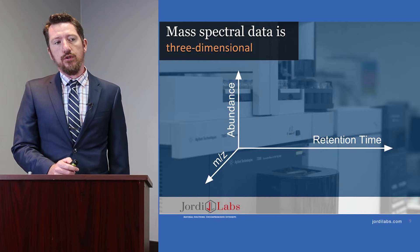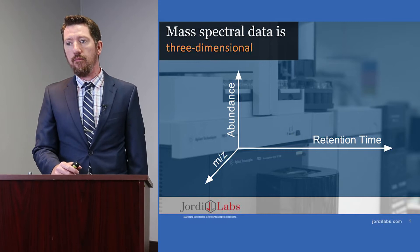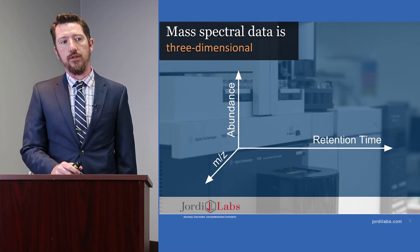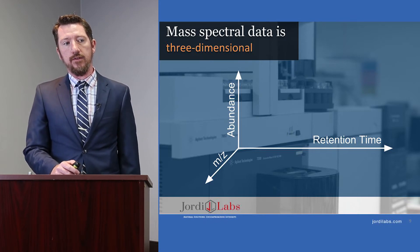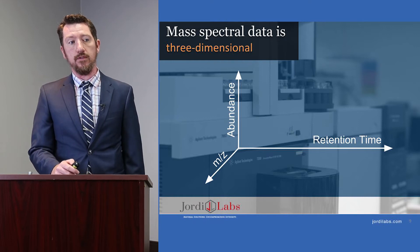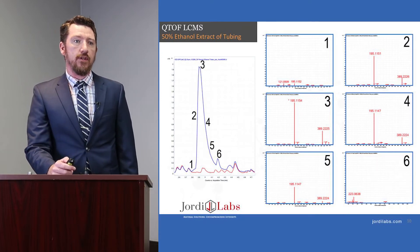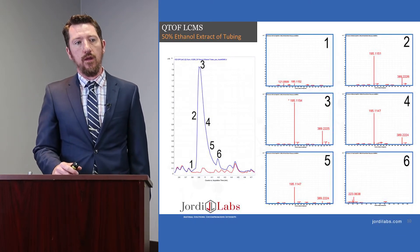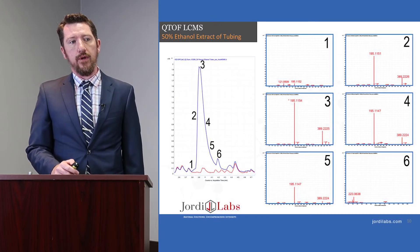In LCMS data, it's important to recognize that mass spectral data is three-dimensional. We're used to seeing chromatograms which represent the abundance of the signal against retention time, and you'll see peaks which are generally identified. But what can often be overlooked is in the third dimension there's a vast amount of data in the mass spectrum at each data point — the MZ values. Looking at example data from our 50% ethanol extract of the tubing, we can see how spectra change with retention time, with a full spectrum at each data point.